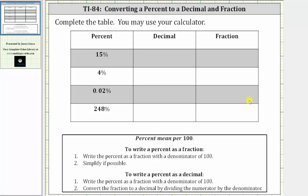In this video, I will show how to use the TI-84 to convert a percent to a decimal and simplified fraction. The main thing to remember is percent means per 100, and therefore we write a percent as a fraction with the denominator of 100.